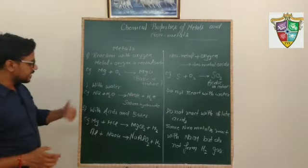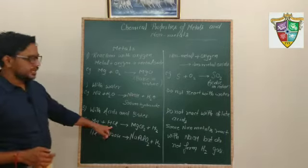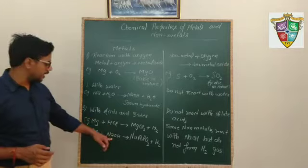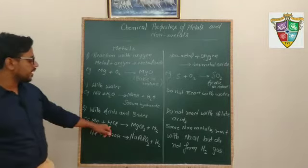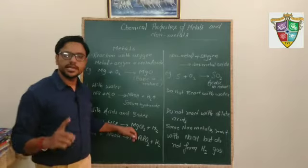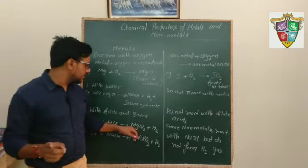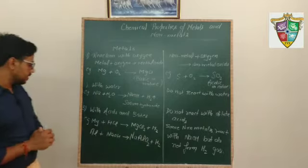And when metals are reacted with acids and bases, HCl is hydrochloric acid and NaOH is sodium hydroxide. Magnesium plus hydrochloric acid forms salt. Magnesium chloride is a salt and hydrogen gas is liberated. Similarly,